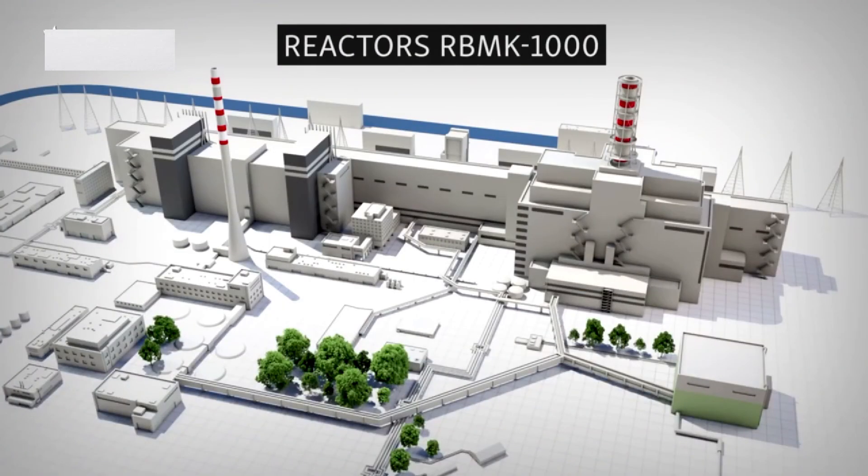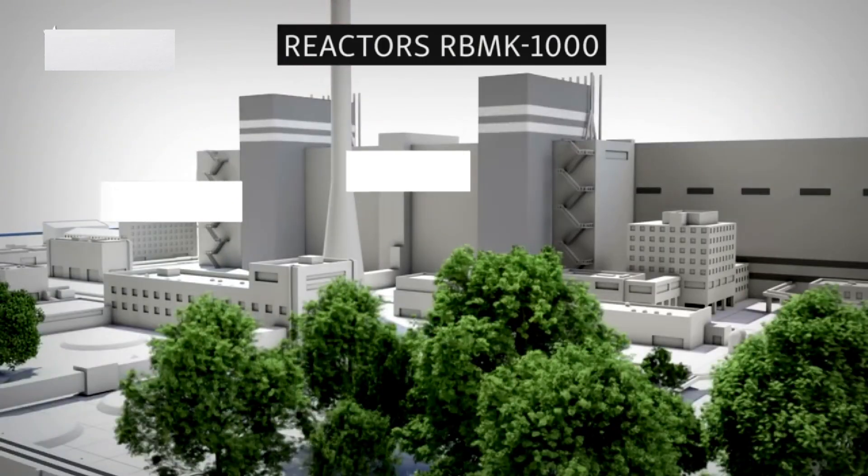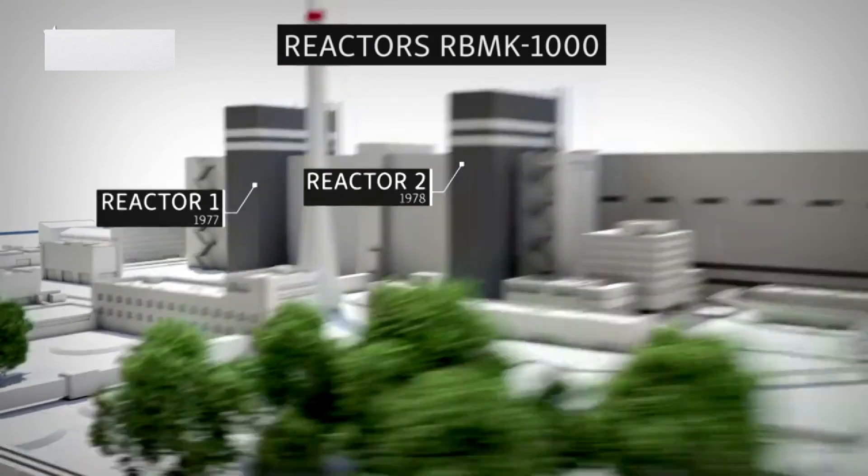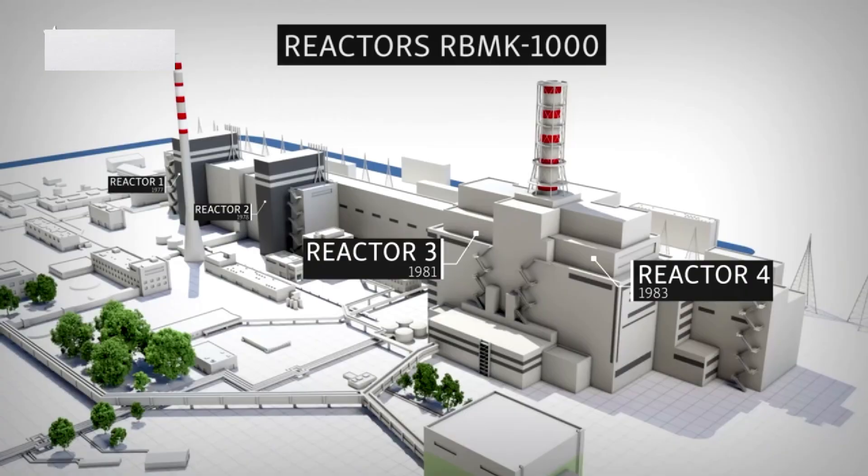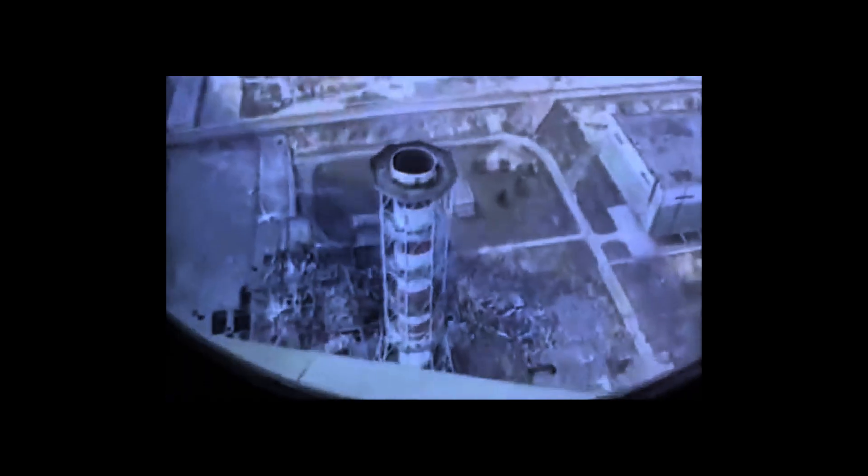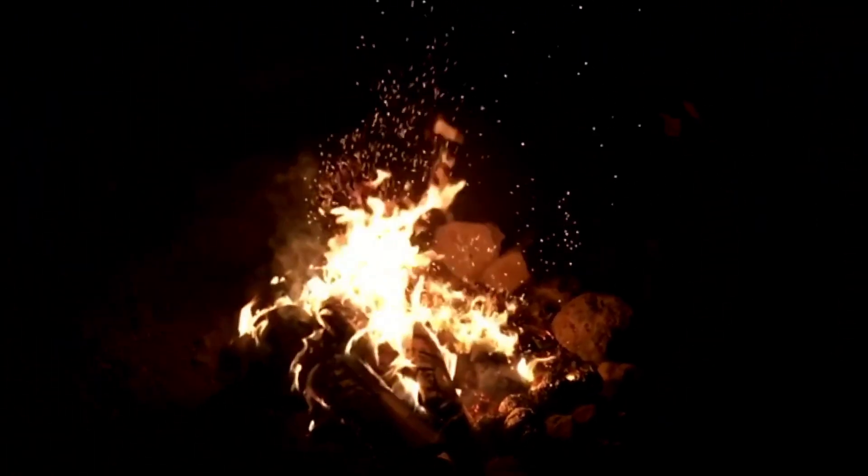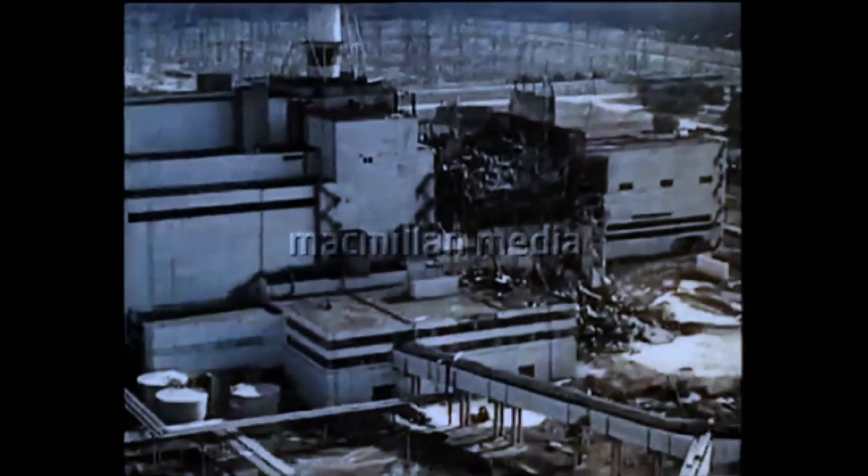We ordered the immediate shutdown of reactors 1, 2 and 3. If the others failed, it would mean catastrophe beyond imagination. Soon after, we flew over Reactor 4 by helicopter, and I saw it with my own eyes. It wasn't a fire, it wasn't a leak. The reactor had exploded completely, like a nuclear bomb had gone off. The roof was gone. The core was exposed, burning, open to the sky. That wasn't supposed to be possible.